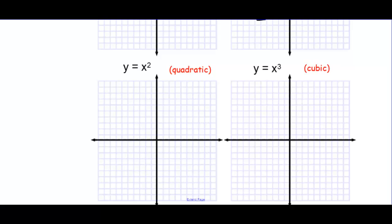We have y equals x squared. If we square 0, we get 0. If we square 1, we get 1 — so we get the point (1,1). If we square 2, we get 4. If we square 3, we get 9. So there is half of the parabola, and then the other half is on the other side of the y-axis. There is a parabola, y equals x squared.